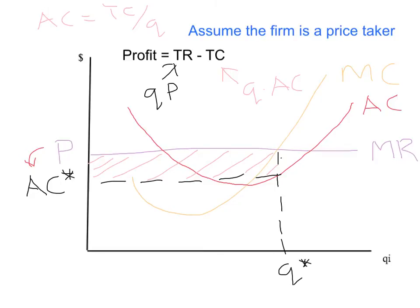A couple of things to note. First, notice that the average cost at Q star is not the minimum average cost — that's one of the common mistakes students make. They pick the minimum average cost regardless of where the firm is actually producing. The firm doesn't maximise profits by producing at minimum average cost, because at minimum average cost, marginal cost is less than the price — the firm wants to produce more. As it produces more, average cost gets pulled up by the marginal cost. So the average cost at the profit-maximising level is not the minimum; it's the average cost where marginal cost equals marginal revenue.